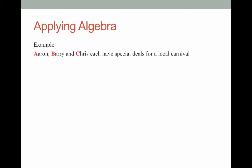So let's take a look at an example. Aaron, Barry and Chris each have special deals for a local carnival. You'll notice that I highlighted the first letter of their names because we've got A, B and C. So it's general names. Now here are our special deals.